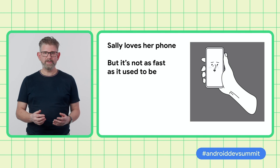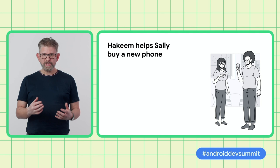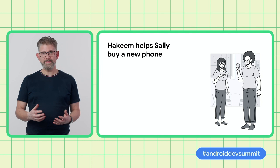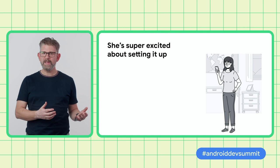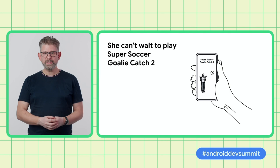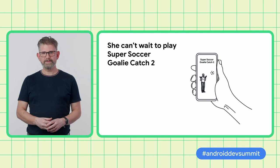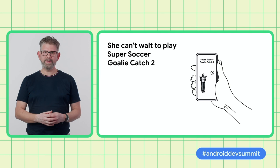Unfortunately though, it's just not got the power it once did. Sally goes to her local independent phone store, where she's recommended a fantastic new Android phone by the highly knowledgeable shop assistant Hakeem. When Sally gets home, she can't wait to set up her new phone, and she's delighted at how easily she can transfer all of her apps, photos, messages and settings from her old phone. As soon as the transfer has finished, she wants to see how some of her favourite games on this gorgeous new phone work. Her favourite casual game is Super Soccer Goalie Catch 2. It's taken her months to get to level 123, but she can't wait to blast through that on her new phone.